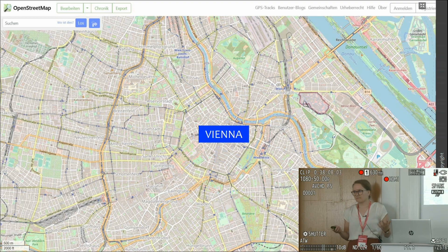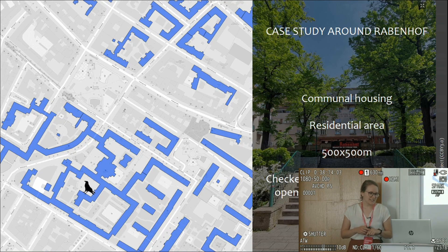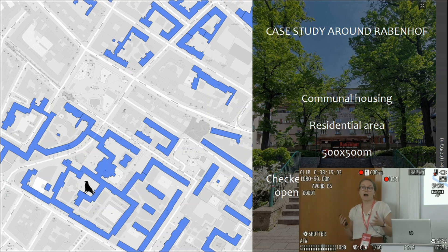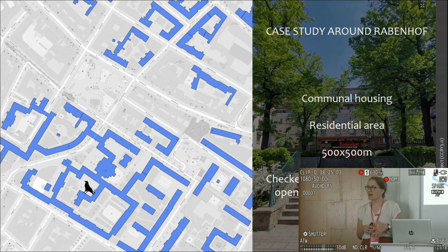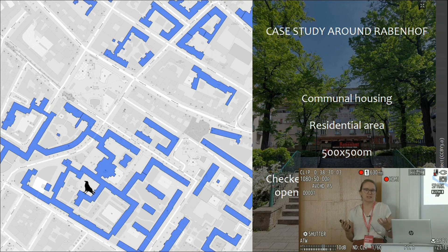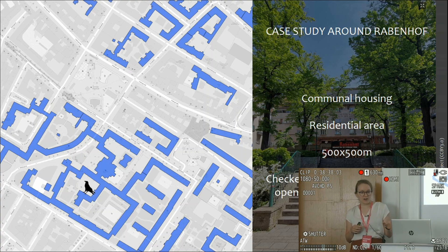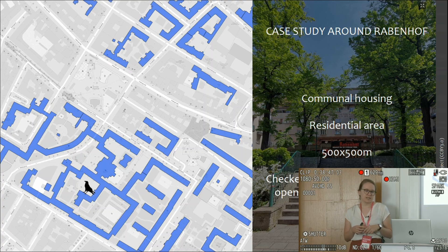This is the case study area I looked at. It's an area around Rabenhof — which can be translated to Ravenscourt — a quite large communal housing unit in Vienna's third district. Most of the case study area is residential, and the whole size is 500 by 500 meters. Within that area, I also did a lot of field mapping, adding data to OpenStreetMap based on walking there, taking pictures, and using open government data.